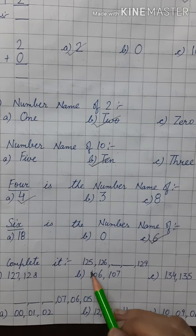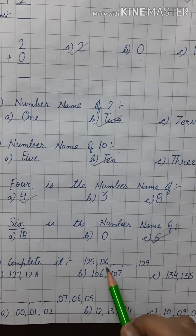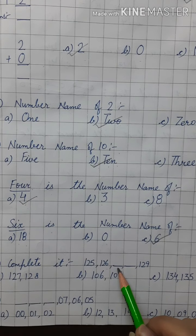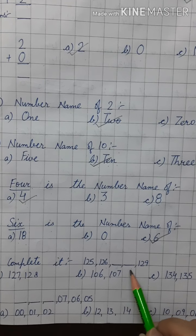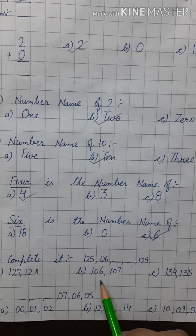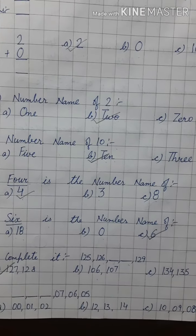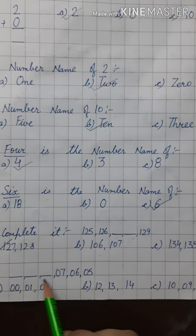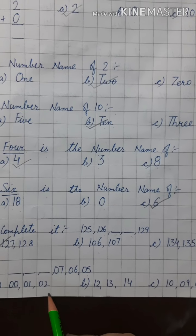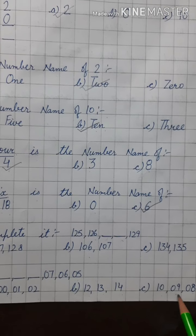Complete it. 125, 126, 127, 128. Kya aata hai 127 aur 128 ke beech? So we will tick this one. 0, 1 aur 2, 12, 13 aur 14. This one. So, we will tick this one.